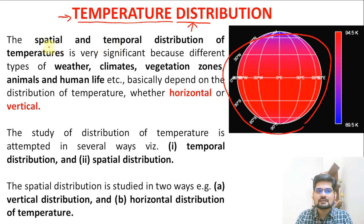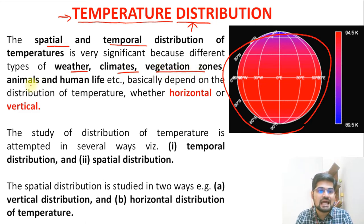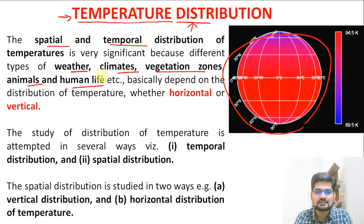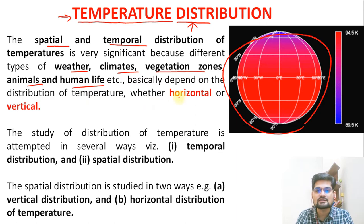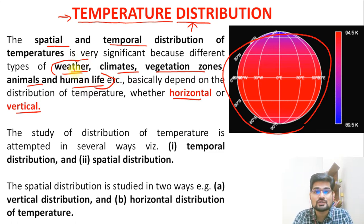The spatial and temporal distribution of temperature is important because it helps to regulate phenomena like weather, climate, vegetation zones, animals, and human life. It has the most important role in sustaining all these processes. Basically, it depends upon temperature distribution — horizontal or vertical — that these processes will proceed in various ways. That's why temperature distribution is important.